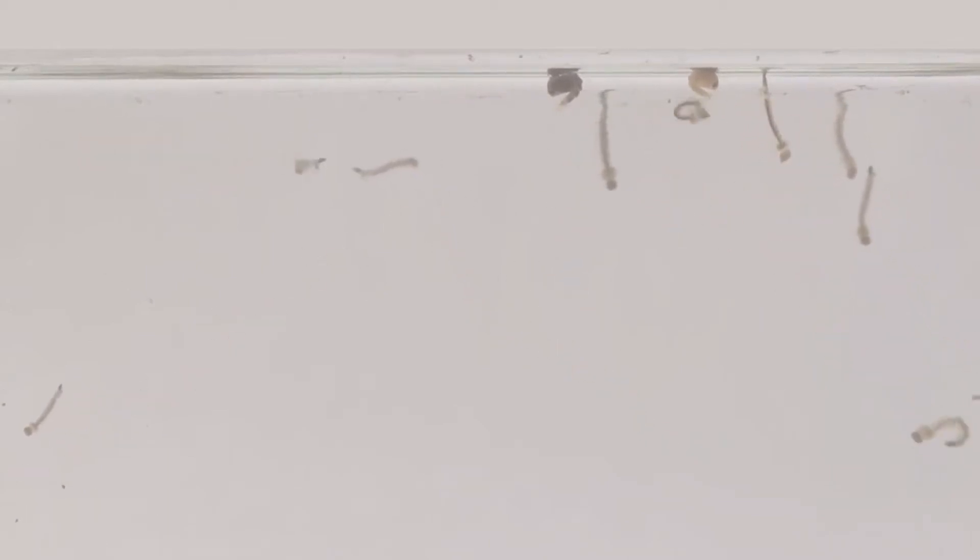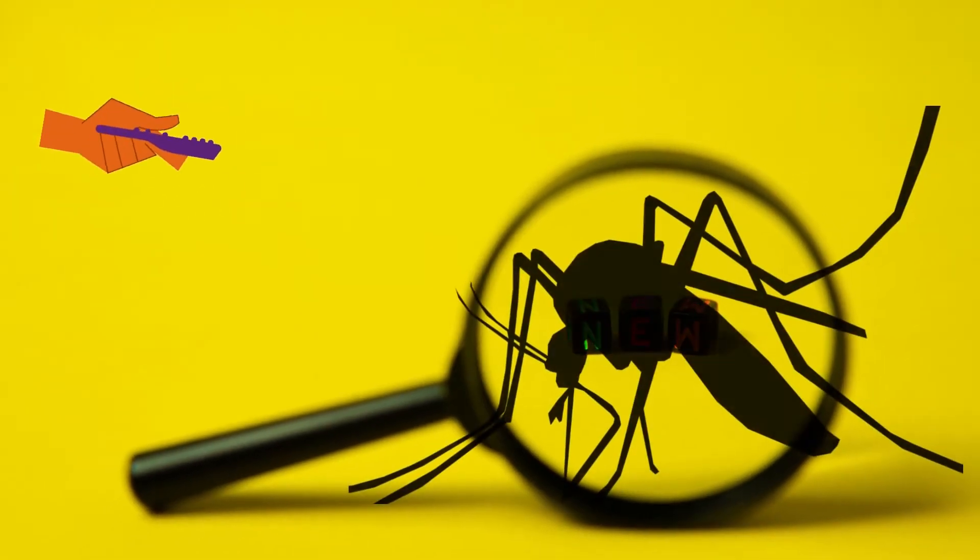After larvae comes the pupal stage. In the pupal stage, it is in rest mode. After pupae become adults, they are ready for blood-sucking, biting, and disease transmission.